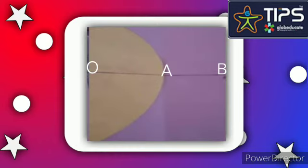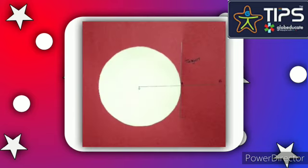Now fold the paper from B to A in such a way that it touches the circle to get a tangent. Now tangent D is formed.